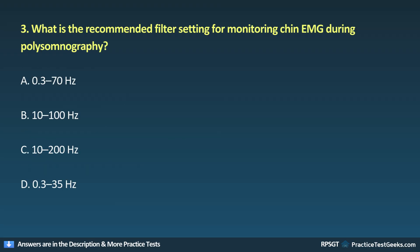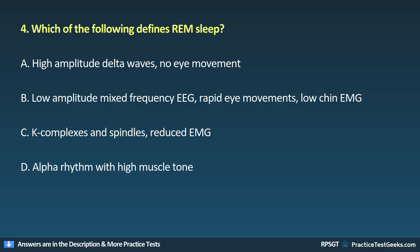Question 3: What is the recommended filter setting for monitoring chin EMG during polysomnography? A. 0.3 to 70 Hz, B. 10 to 100 Hz, C. 10 to 200 Hz, D. 0.3 to 35 Hz.